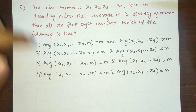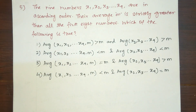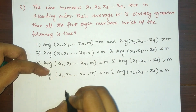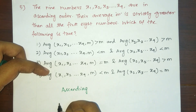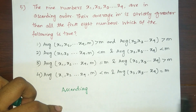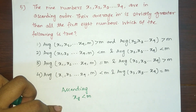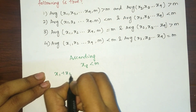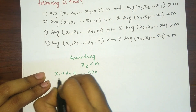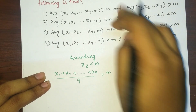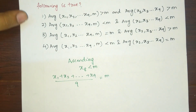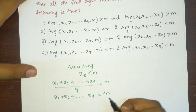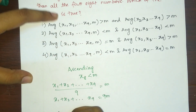Fifth question: nine numbers x1, x2, x3 through x9 are in ascending order. Their average m is strictly greater than all the first eight numbers. Which of the following is true? It is given that the numbers are in ascending order, and x8 is less than the mean m. Setting up the equation: (x1 + x2 + ... + x9) / 9 = m, so x1 + x2 + ... + x9 = 9m.